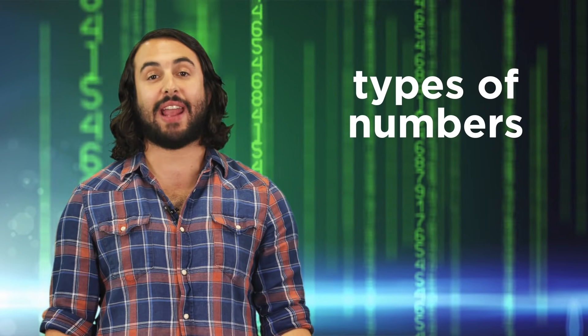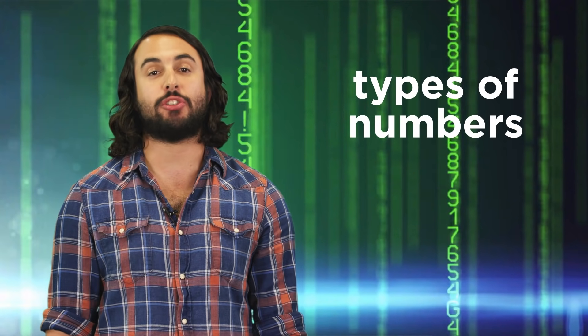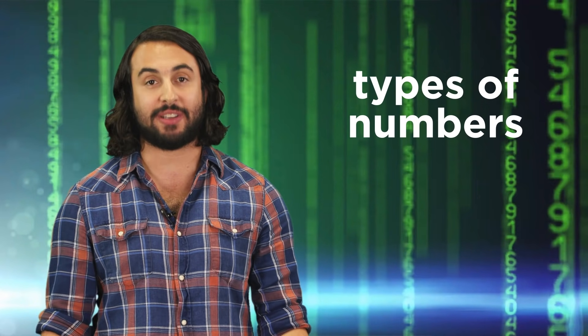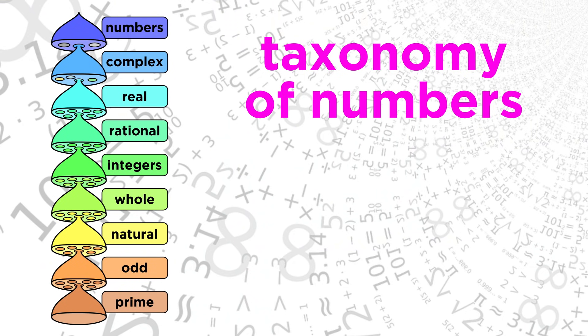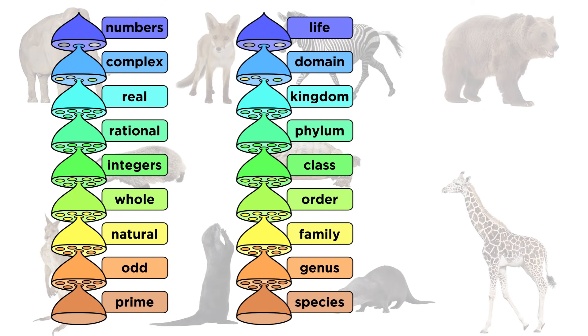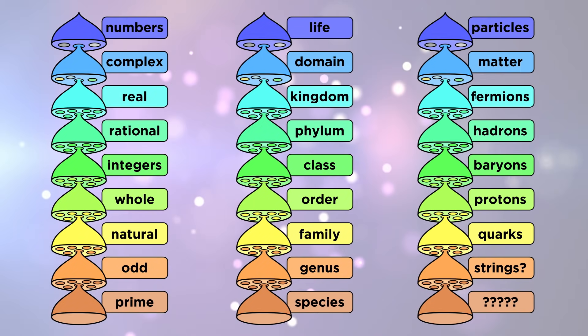We have already begun to look at some different types of numbers, but it is time to do a survey of all the types of numbers that exist, and make sure we understand their characteristics. To do this, we can look at the taxonomy of numbers, just like we would look at the taxonomy of biological organisms or fundamental particles.